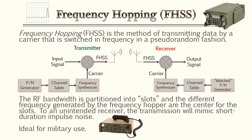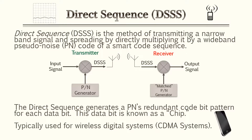Every time an unintended receiver listens to a particular frequency, they're only going to get a blip of the actual communication, so it appears as noise or impulse noise. In the illustration: a pseudo noise generator feeds a channel table, which has a list of frequencies that go to a frequency synthesizer generating the carrier. The receiver matches the same pseudo noise code. This application is typically used in military use.